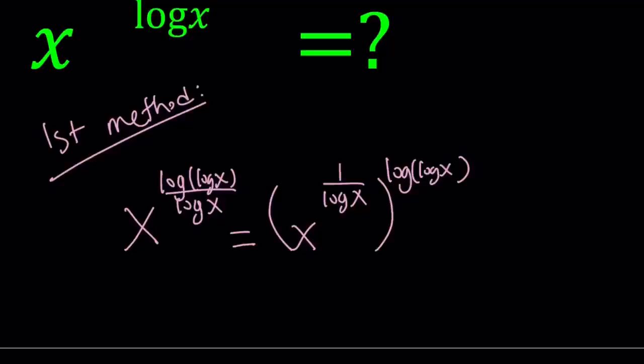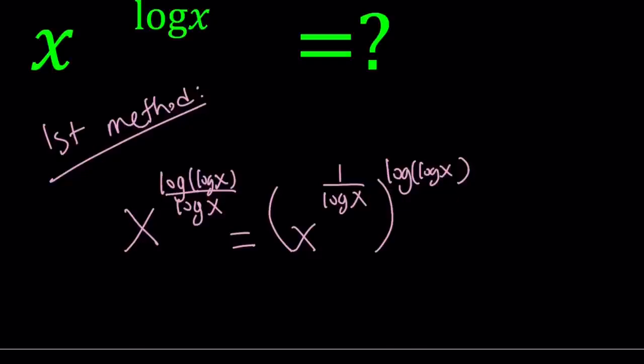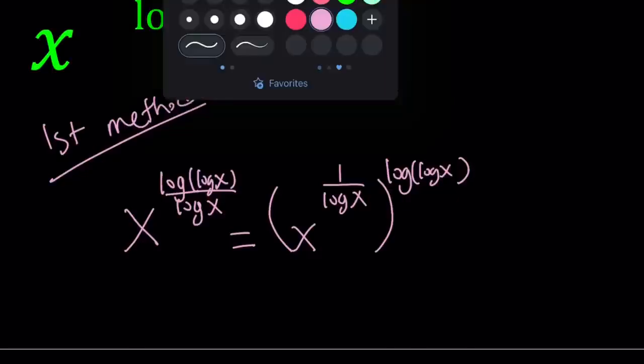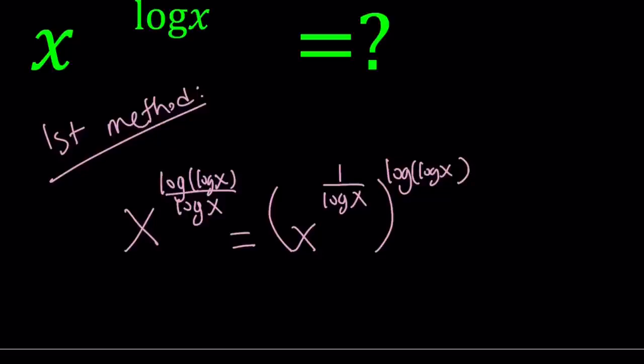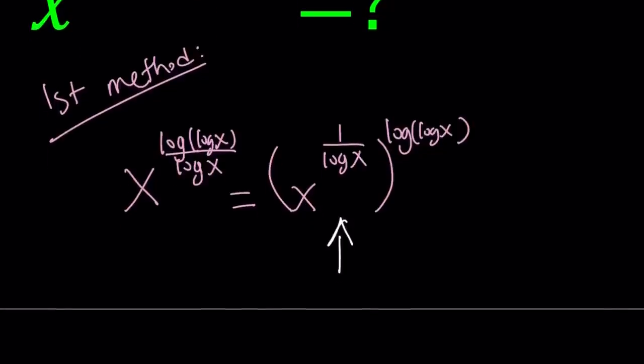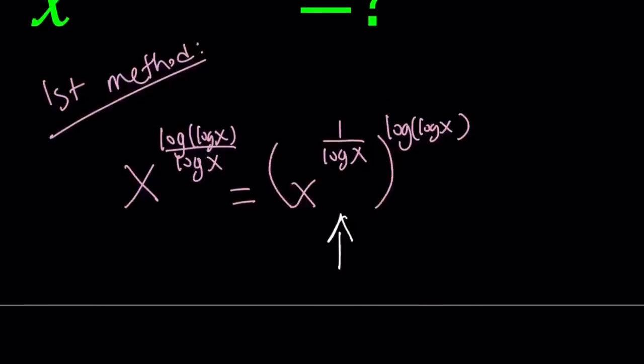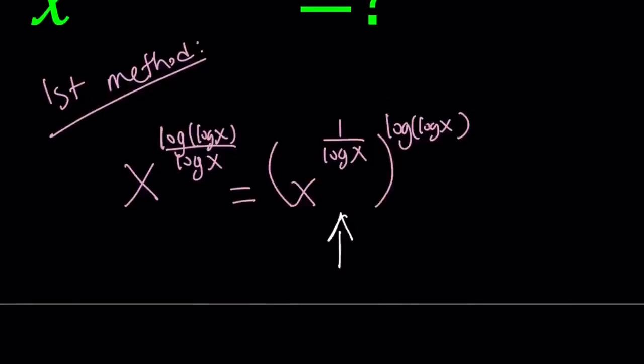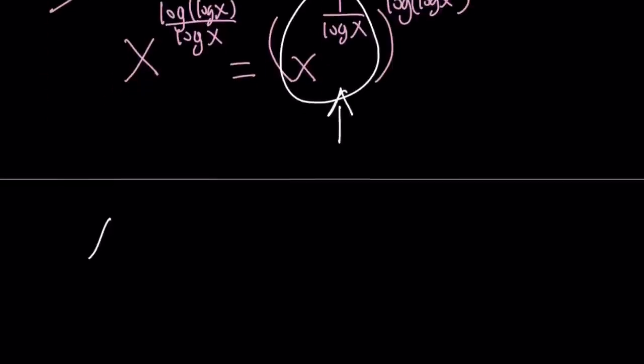So why did I do that? Why did I leave the 1 over log x inside? Because that expression, if you've seen the previous videos, if you didn't, please do. This expression should be familiar to you. We talked about it a few times. I know there's been more than one video. And again, if I remember, I'll try to share the links down below. So here's what I can do. If you don't remember what this was, I'm going to go ahead and simplify it one more time for you. So what is x to the power 1 over log x? I don't know what it is, right?